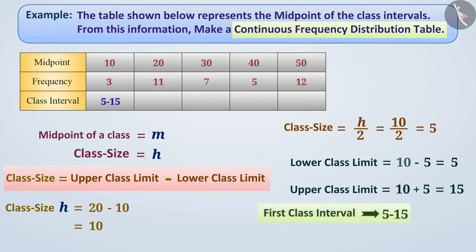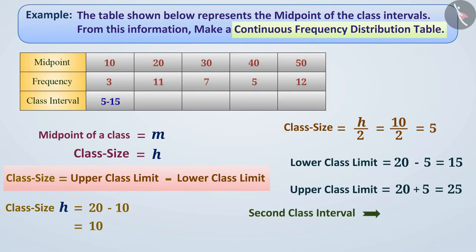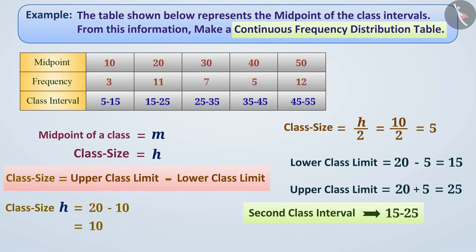In the same way, we can get the lower class limit 15 of another class by subtracting 5 from the midpoint 20, and adding 5 to 20 to get the upper class limit 25 of the second class. So the second class interval will be 15 to 25. Similarly, we can find all class intervals in this way. Now we can make the continuous frequency distribution table from the information given.